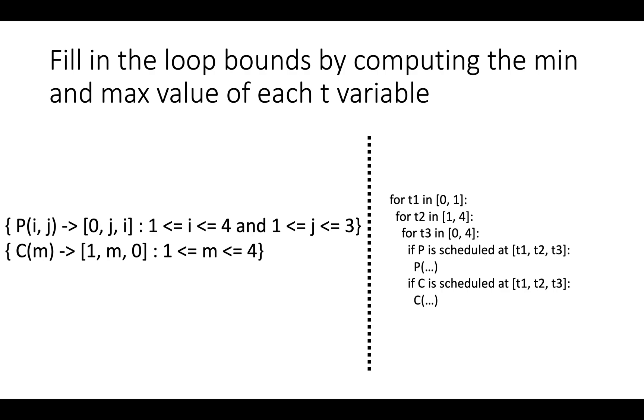The next step is to fill in the loop bounds by computing the min and max value of each t variable. So if we look back over at the schedule, if we just project away all the other components, components two and three of the output space, and we just look at component one and ask what's the minimum value that that component has and the maximum value that it has.